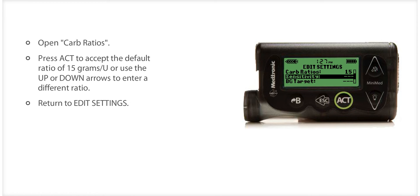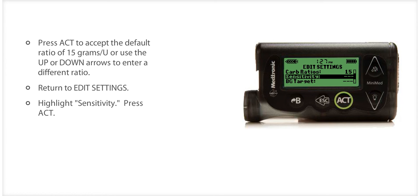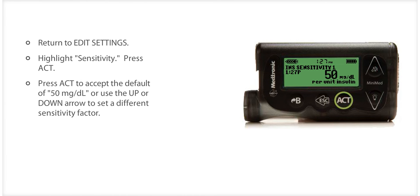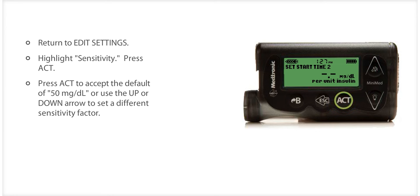Press ACT to return to the Edit Settings screen. The next factor that needs to be programmed is insulin sensitivity. Your insulin sensitivity factor is the number of points, or milligrams per deciliter, one unit of insulin lowers your blood glucose. You can program up to eight different insulin sensitivity factors for different times of the day. For this training, we'll program only one. Scroll down to select Sensitivity and press ACT. Enter the practice value — for this example, we will use 50 milligrams per deciliter. Press ACT. If the sensitivity factor is outside the typical range of 20 to 100 milligrams per deciliter, a message will appear. You can press ESC to correct the value or ACT to continue and confirm the value.